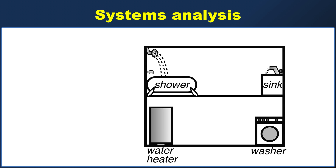So let's consider a house, or at least part of a house, consisting of a shower, a sink, a water heater, and a washer. And let's say that the system we're really interested in is this washer.